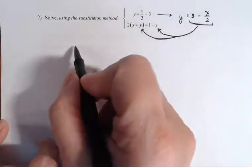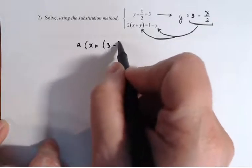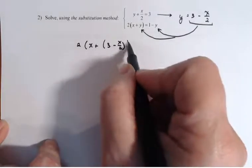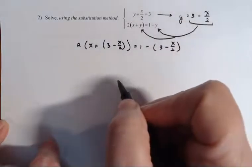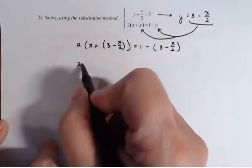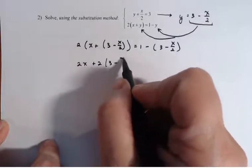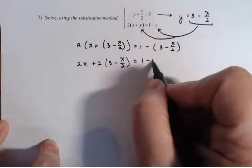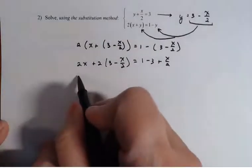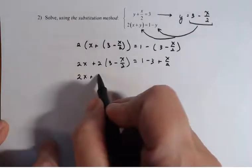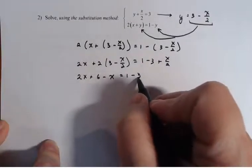So I have here two times x plus three minus x over two. Continuing, I have two x plus two times three minus x over two equals one minus three plus x over two. Keep distributing: two x plus six minus x equals one minus three plus x over two.